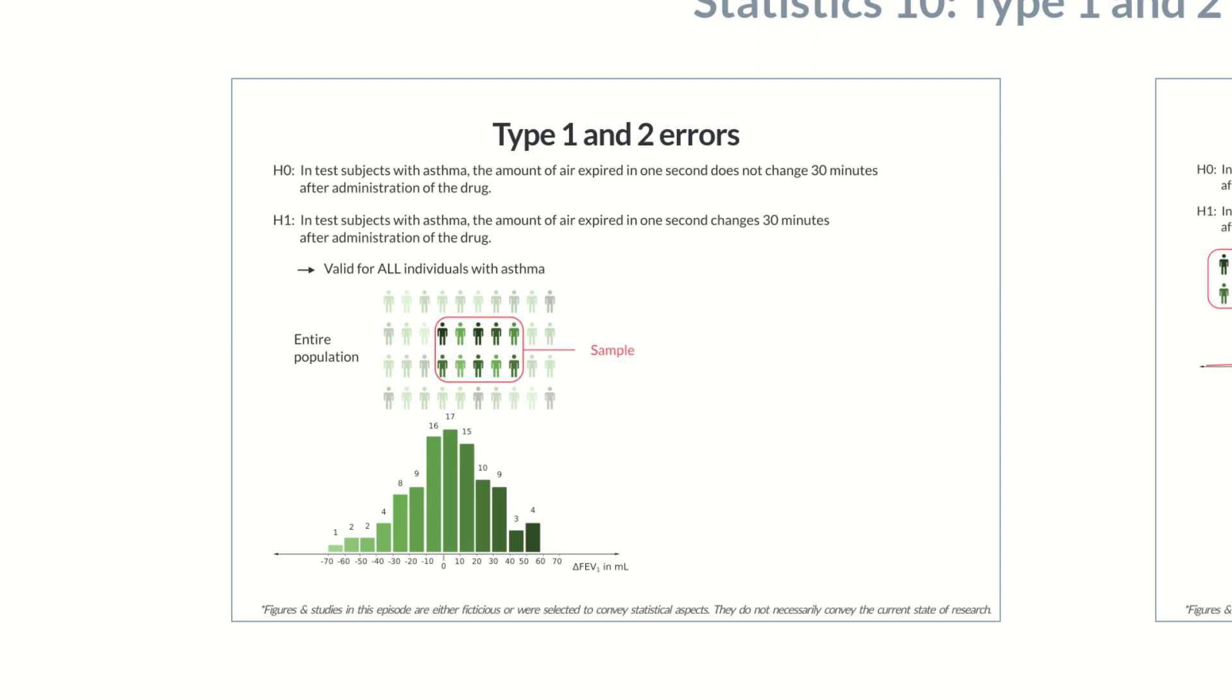The data distribution can be more or less described with a bell curve. In other words, the data set here is approximately normally distributed, but that's not always the case. The mean FEV1 value improves by approximately 4 mL in all participants with asthma.